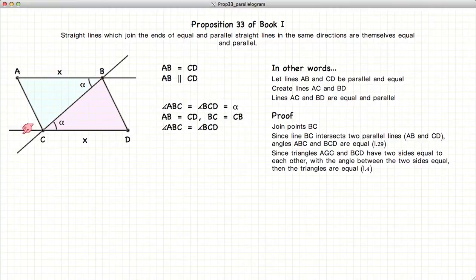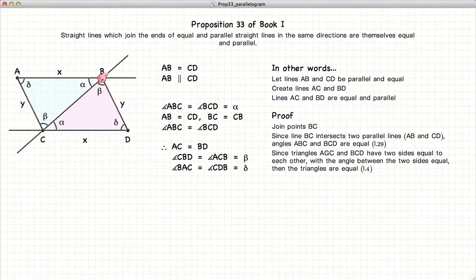Now, if we look at the two triangles ABC and BCD, we have a side, angle, side, and a side, angle, side that are equivalent. So, according to Proposition 4, the two triangles are equal in all respects, which gives us the angles beta and beta and length y and y. So, we've just demonstrated that these two lines are indeed of equal length.